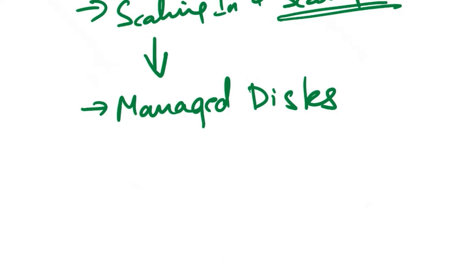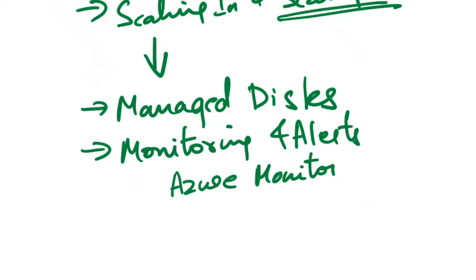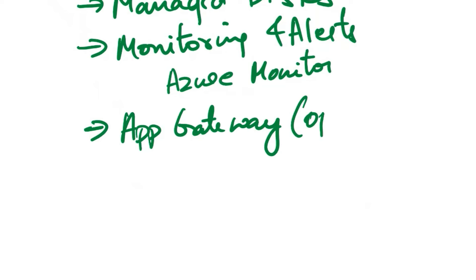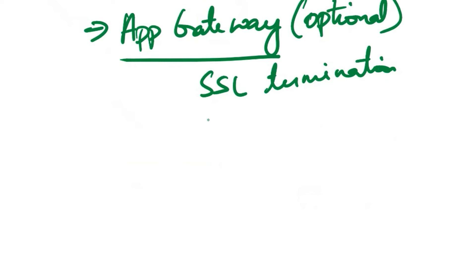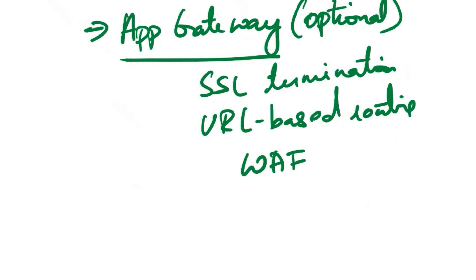The next consideration is managed disks. Use managed disks for your VMSS instances to simplify disk management and ensure data durability. For monitoring and alerts, implement Azure Monitor and set up alerts to notify you of any issues or when auto-scaling events occur. Monitor key performance metrics such as CPU usage, memory utilization, and network traffic. Optionally, if your application requires advanced load balancing capabilities, consider using Azure Application Gateway, which provides features such as SSL termination, URL-based routing, and a web application firewall.